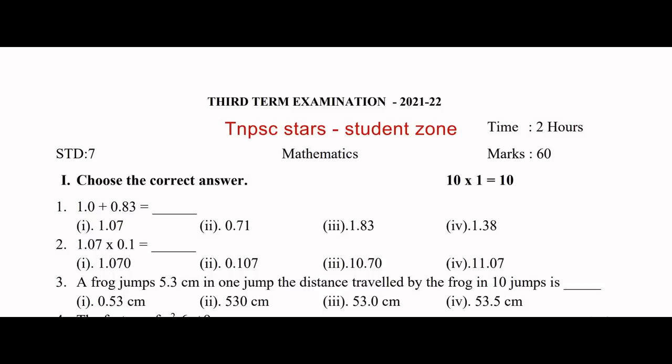Question 1: 1.0 plus 0.83 is equal to — the answer is the third option, 1.83. Next, 1.07 into 0.1 — if we multiply these two decimal digits, the answer is 0.107, so option 2.